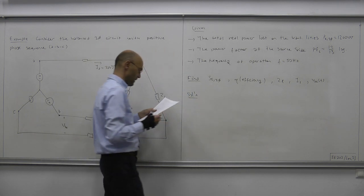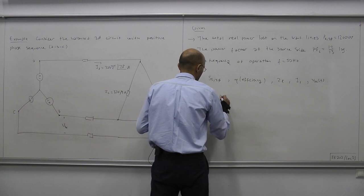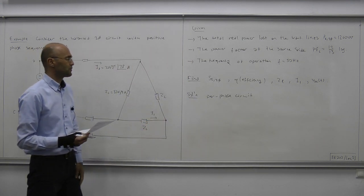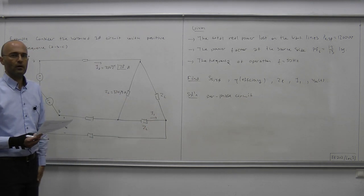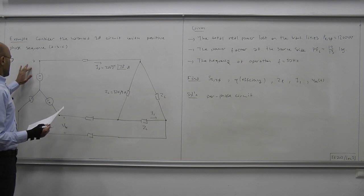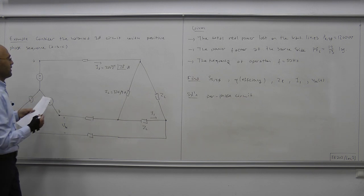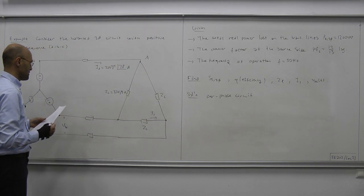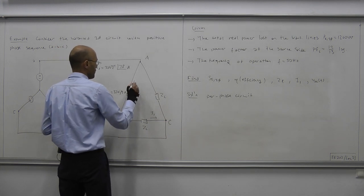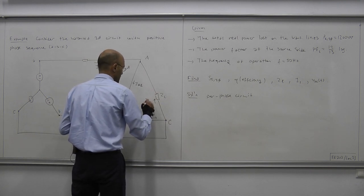Let's begin our solution using the per-phase circuit. Before that, let's translate what I1 is into our usual ABC notation. The nodes on the source side are labeled A, B, and C, making the phase currents IAB, IBC, and ICA. Hence, I1 is no other than the phase current IBC.